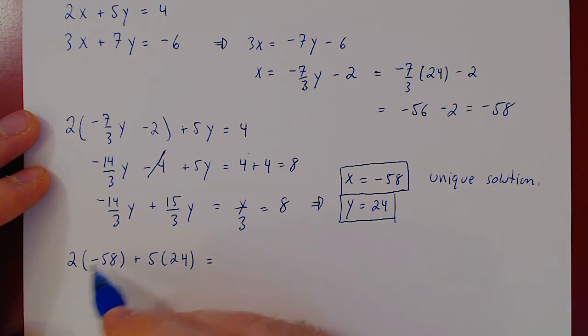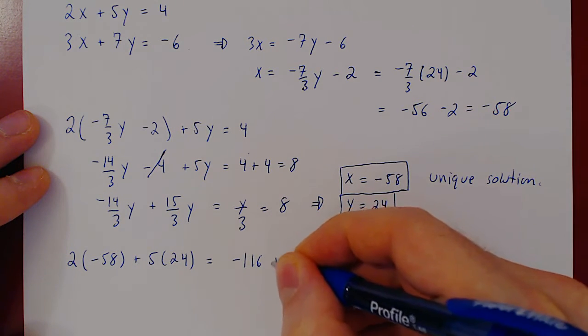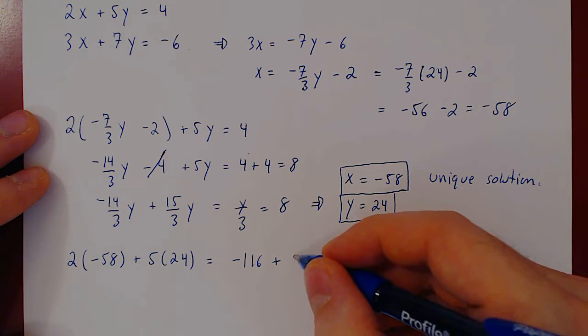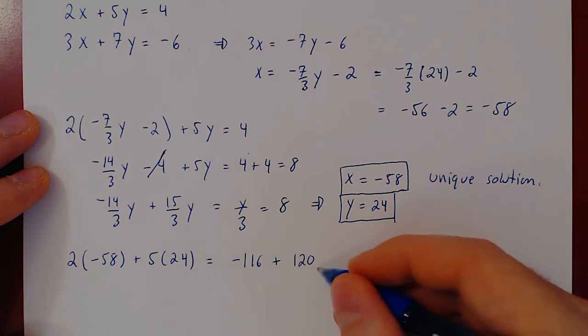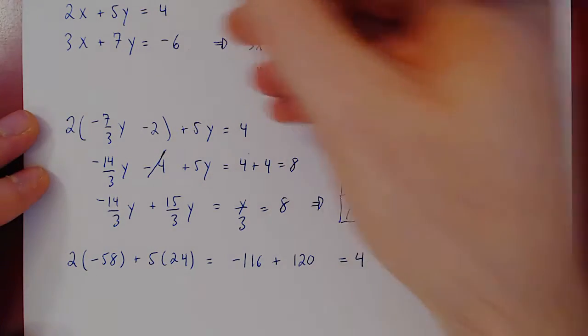2 times 50 is 100, 2 times 8 is 16, so that's minus 116, plus 5 times 20 is 100, plus 5 times 4 is 20, that's 120. And 120 minus 116 is obviously positive 4. Check.